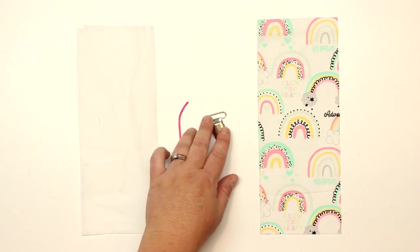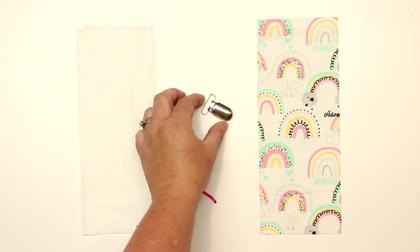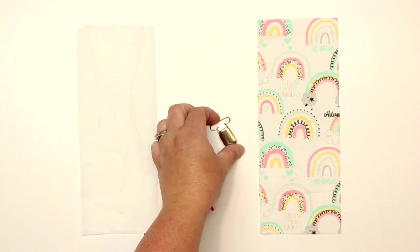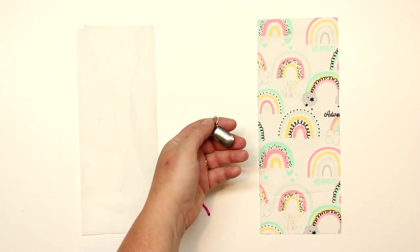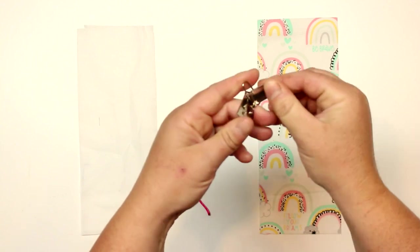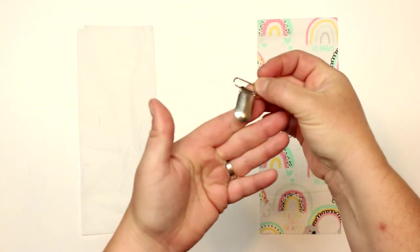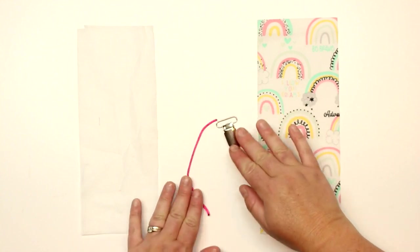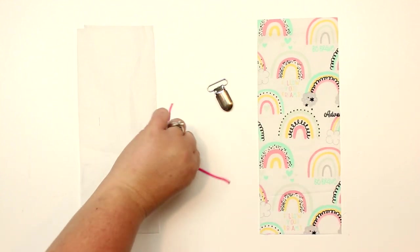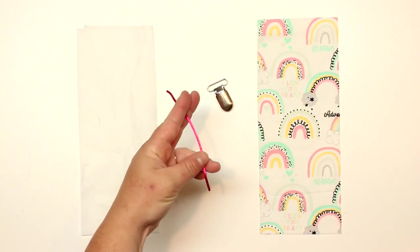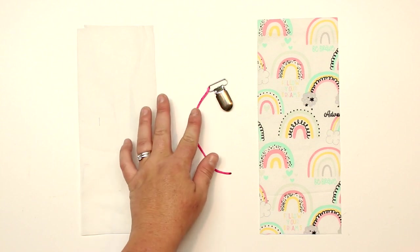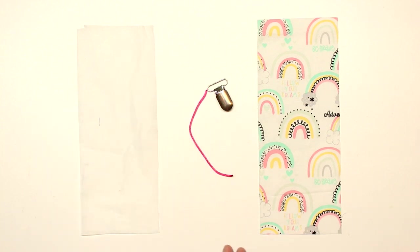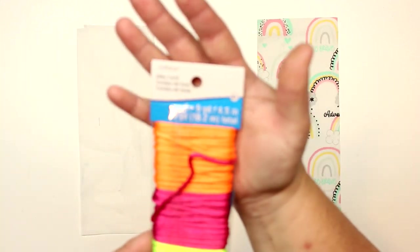I'm going to be using a suspender clip, a metal one. There are many different variations and designs of suspender clips, but the general rule is one that has little teeth so that you can clip it on to something. Then I'm going to be using a little piece of this silky cord, and you can really use anything you want.